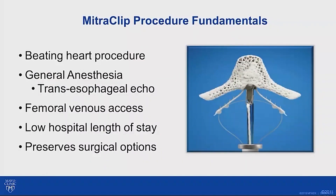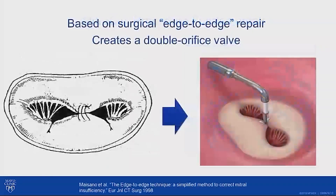Some fundamentals about the MitraClip procedure: it's a beating heart procedure under general anesthesia because we use transesophageal echo to guide it. It's placed via femoral venous access and transseptal puncture to access the left atrium and place the clip on the mitral valve. It preserves surgical options — you can have surgery after the MitraClip is in place. It's inspired by the Alfieri stitch, which is more of a bailout technique, clipping the anterior and posterior leaflets together to create a double orifice valve.